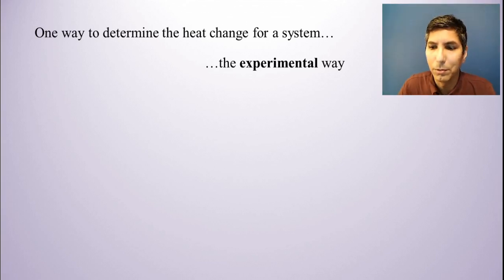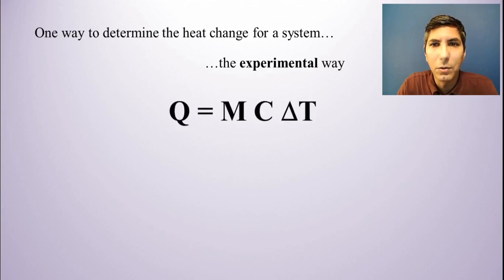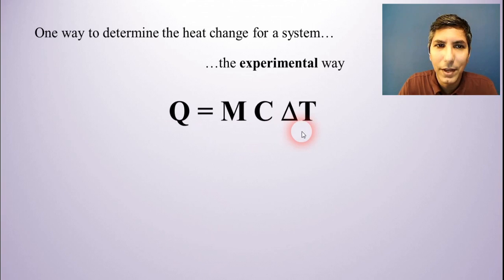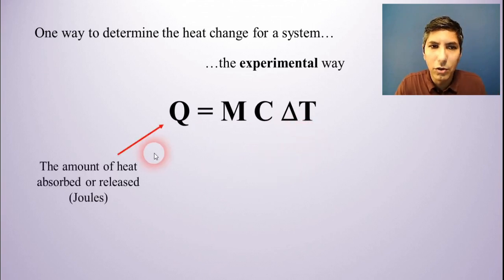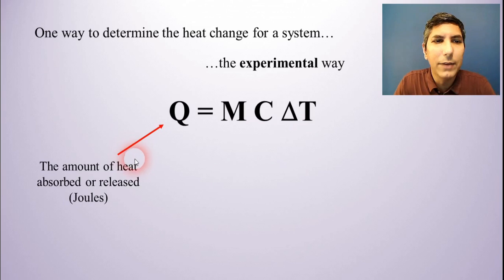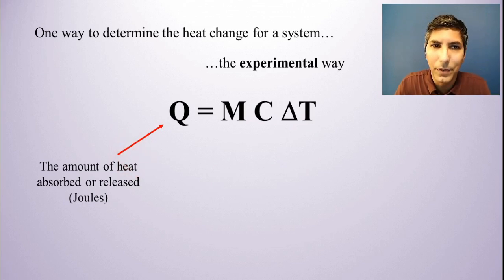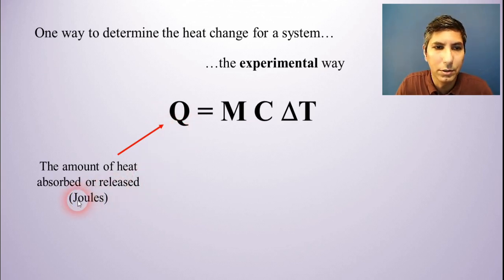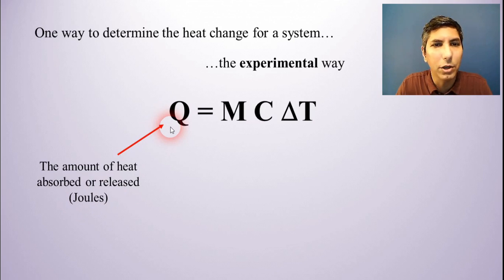This is the experimental way. The equation that we're going to use for this is Q equals MC delta T. Q is the variable that represents the amount of heat that's released or absorbed by the system, and that's going to be given to us or we're going to have to calculate it in joules. If you see a value in joules, that's going to be your value for Q.